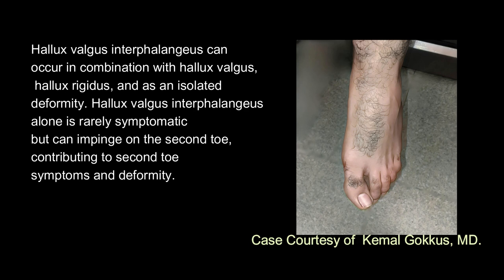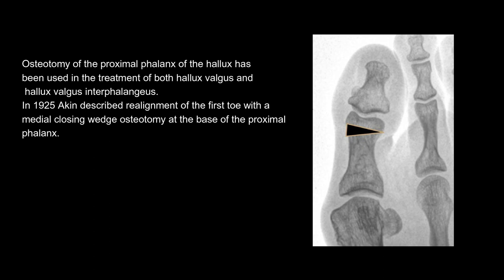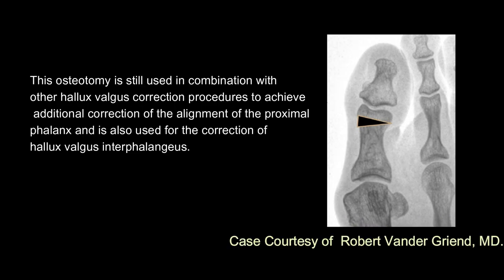Hallux valgus interphalangeus alone is rarely symptomatic, but can impinge on the second toe, contributing to second toe symptoms and deformity. Osteotomy of the proximal phalanx of the hallux has been used in the treatment of both hallux valgus and hallux valgus interphalangeus. In 1925, Akin described realignment of the first toe with a medial closing wedge osteotomy at the base of the proximal phalanx. This osteotomy is still used in combination with other hallux valgus correction procedures, and also for the correction of hallux valgus interphalangeus.